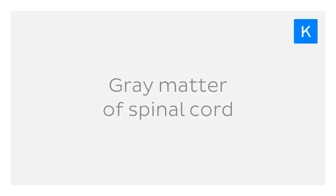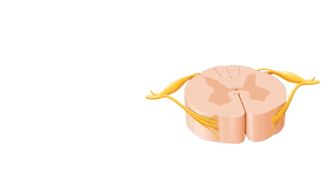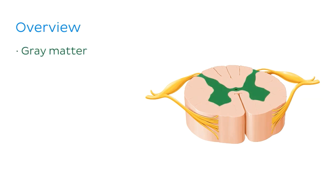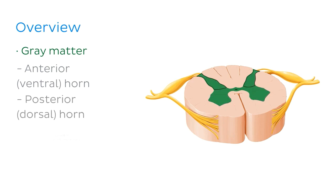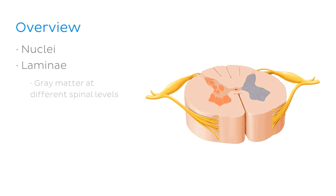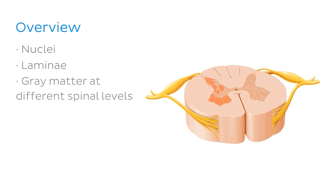Let me give you a quick overview of what we'll be learning today. We'll start with a brief recap of the gross anatomy of the spinal cord and what it looks like in cross-section. We'll then move on to the grey matter, seeing how it's divided into three areas: the anterior horn, the posterior horn, and the lateral or intermediate horn. We'll take a closer look at the nuclei within each horn, and how the grey matter can be further subdivided into areas called the laminae. We'll then look at how structures within the grey matter contribute to its appearance at different levels of the spinal cord, and finish up with some clinical notes.